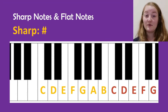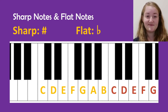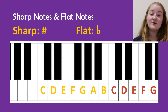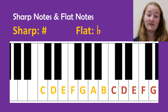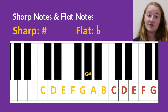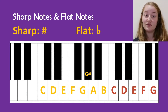This is the symbol for sharp, and this is the symbol for flat. Let's look at the note G as an example. The black note which is just higher than G is called G sharp. The black note slightly lower than G is called G flat.